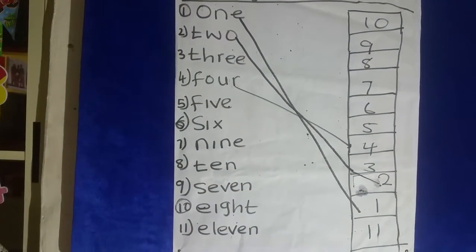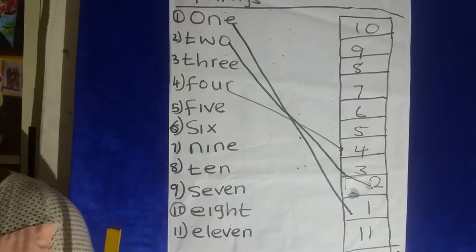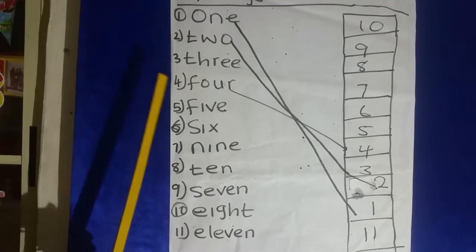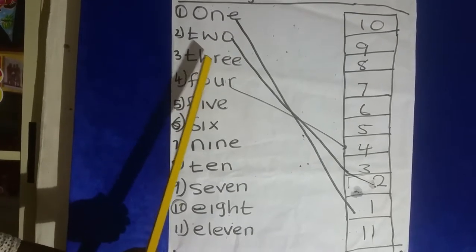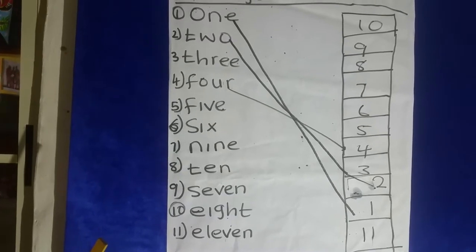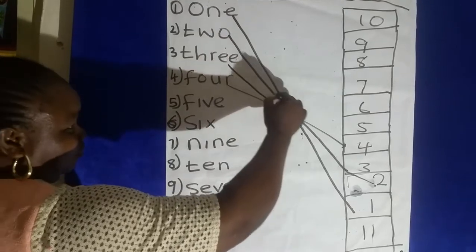Who will show me number three? Who can spell number three? Spell it again. Good. Number three is T-H-R-E-E three. Now I am going to look for number three. I see number three. Now we are going to match it to number three.